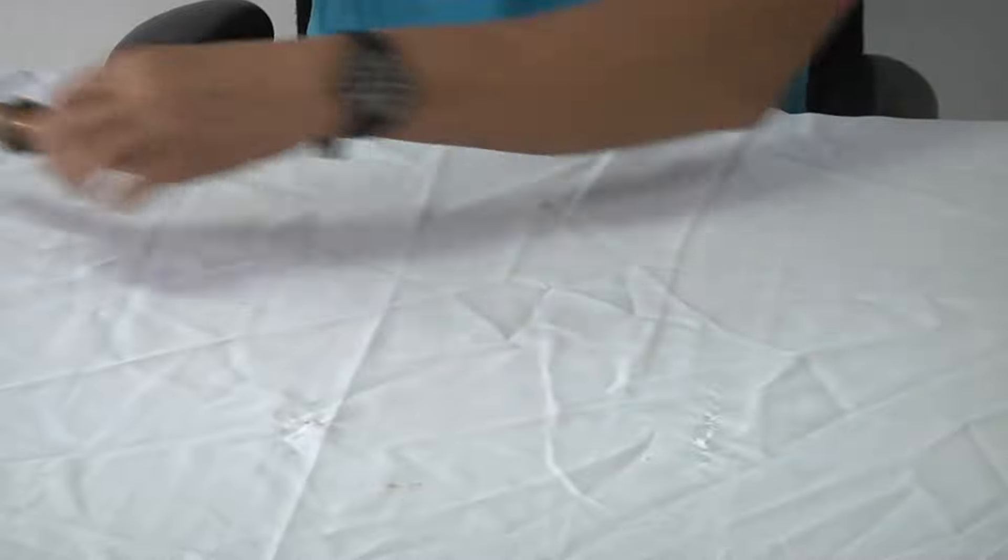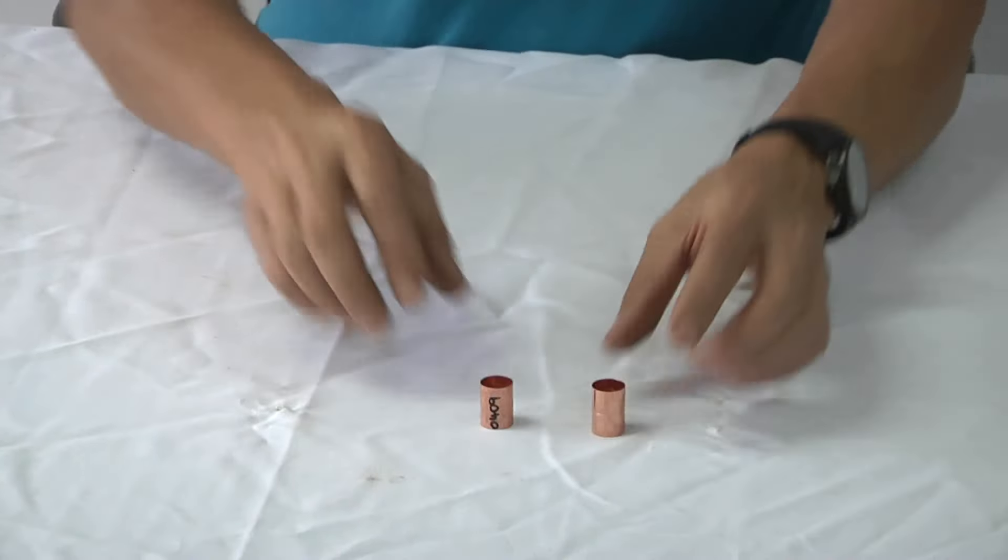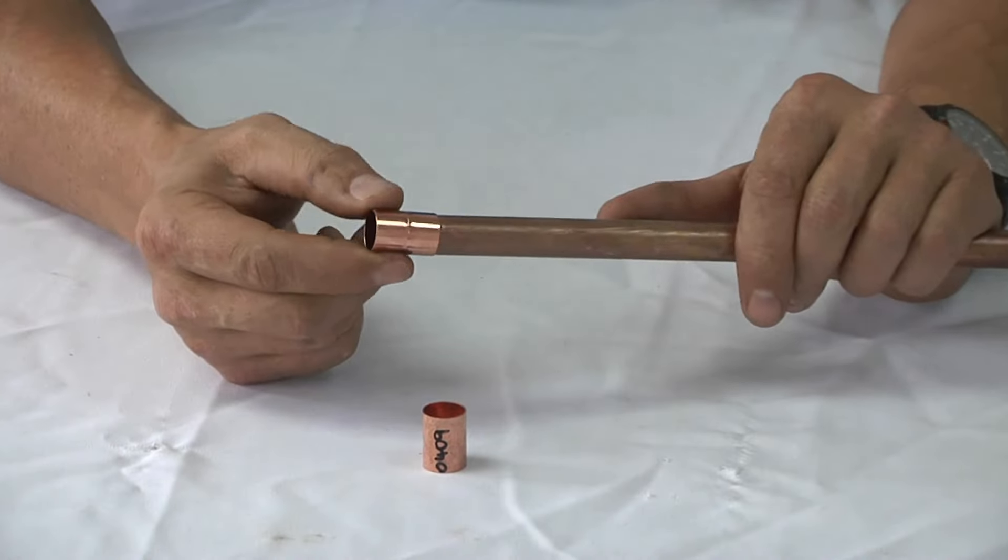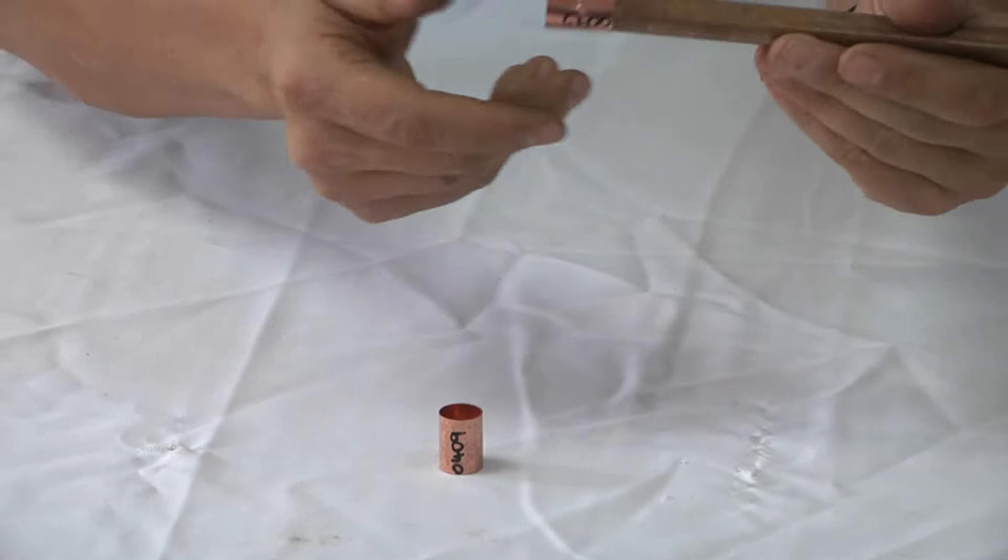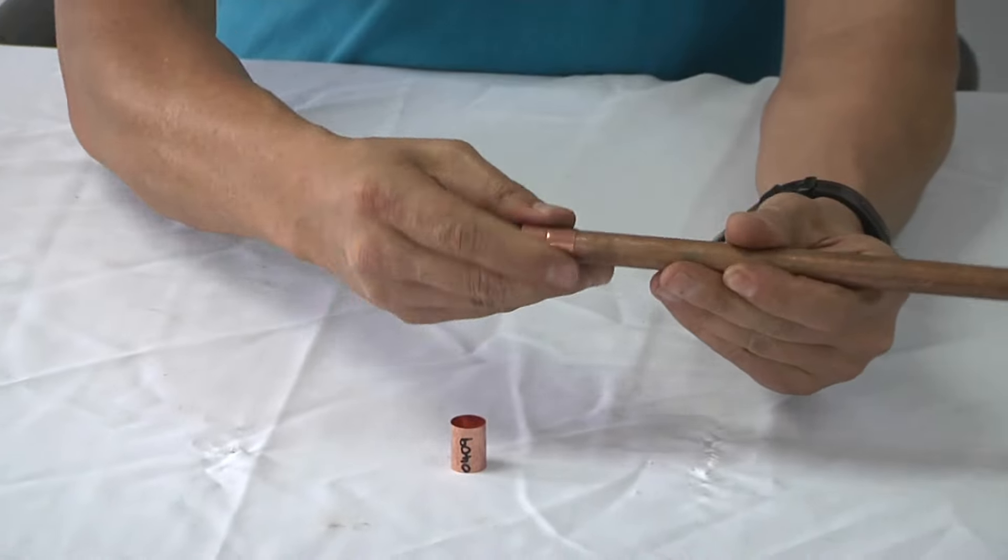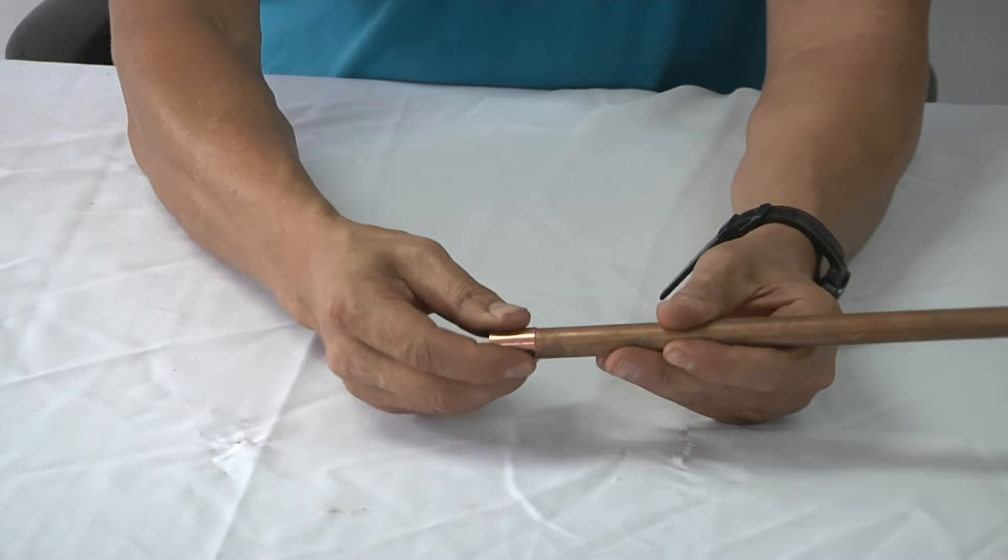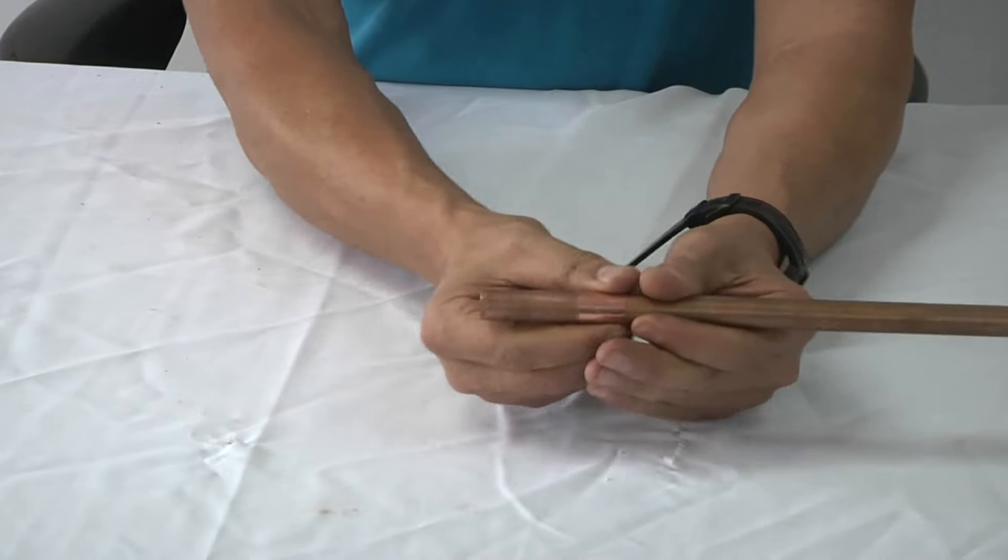Exactly the same thing we have in half inch. Those are the 15 millimeter straight couplers. Again this is a single socket which goes over one side. It's called a 15 millimeter single socket and this is the slip socket which again you can join two pipes in the wall.